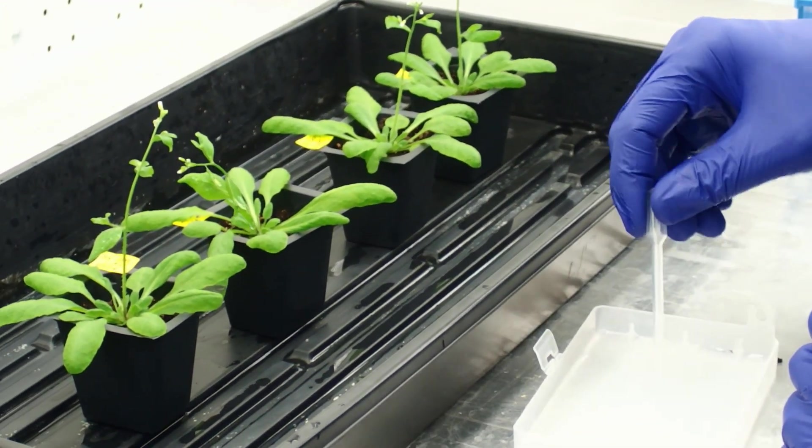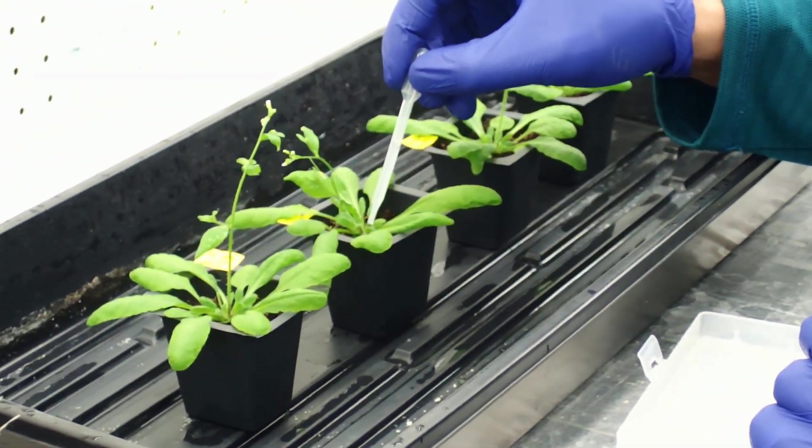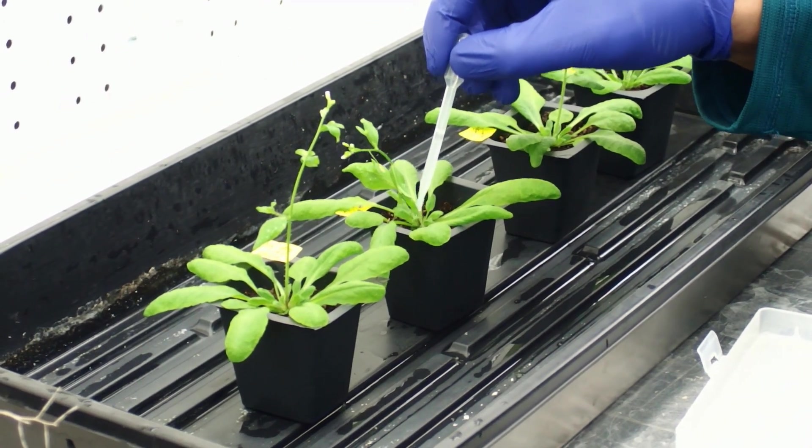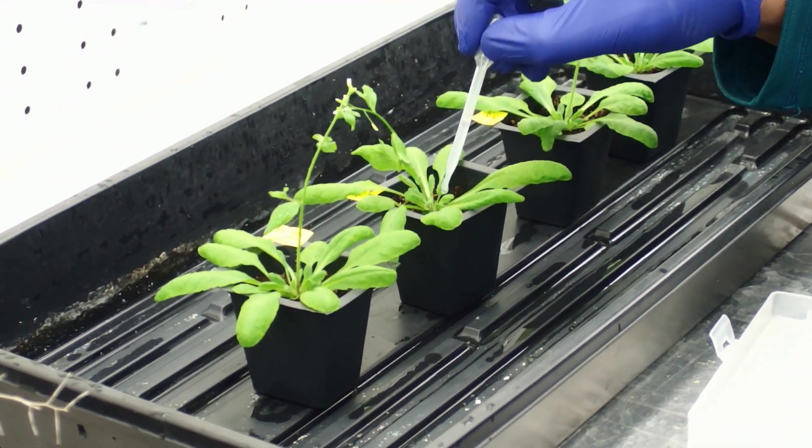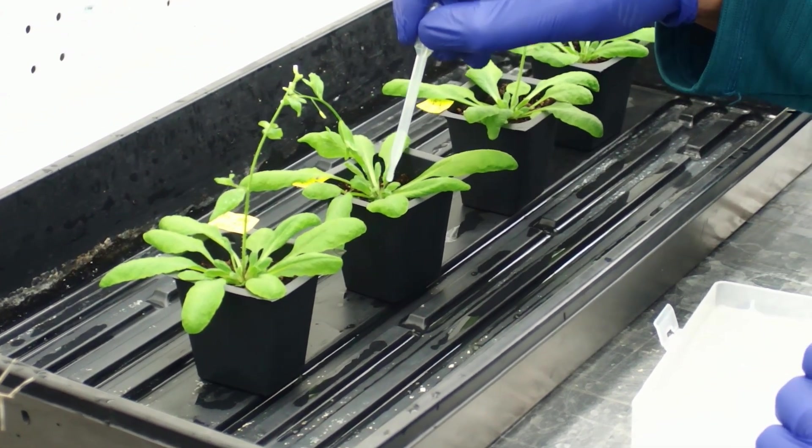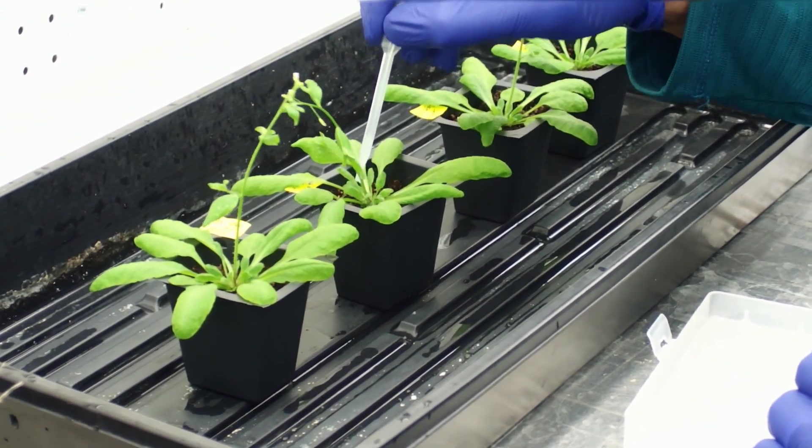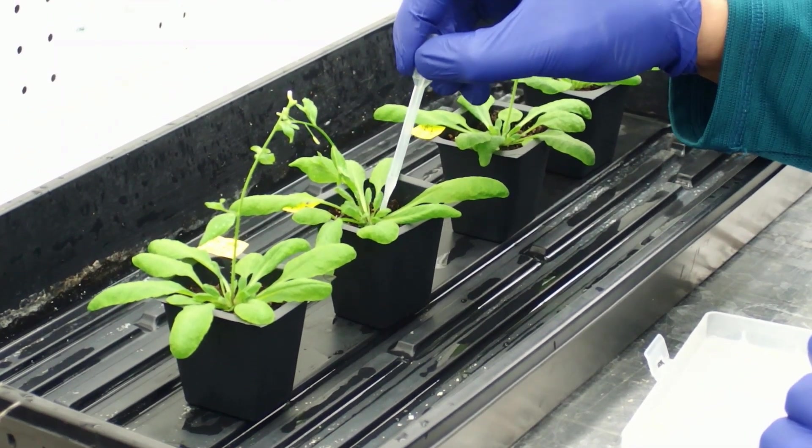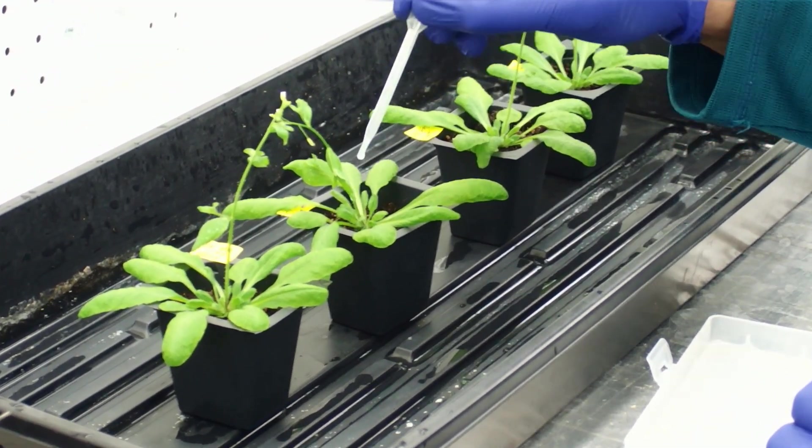Again, pipette these young buds at the base of the plant. Those young buds, they'll grow into secondary inflorescences. You actually get a lot of seeds from those areas.